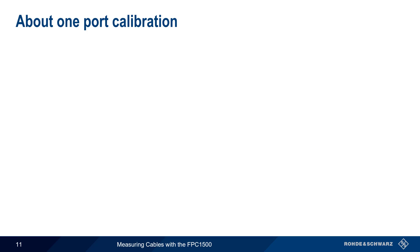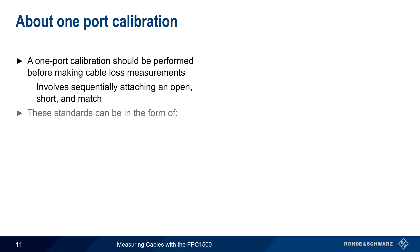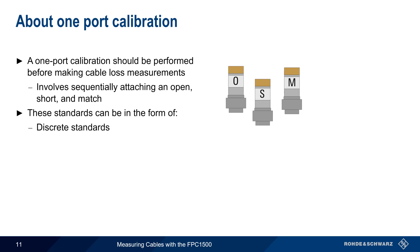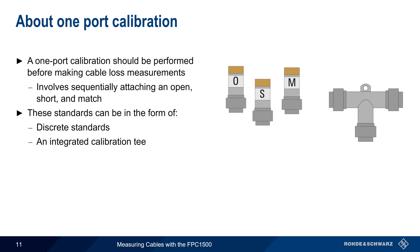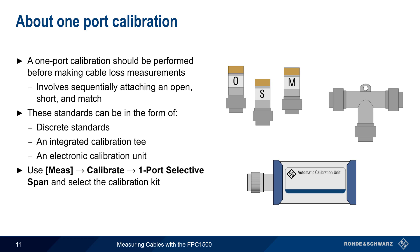Before making any one-port measurements, a one-port calibration should be performed. This process involves sequentially attaching an open, a short, and a match or load to the location where the cable under test will be connected. These standards can be in the form of discrete standards or may be combined into a calibration T. In addition to these manually switched standards, electronic calibration units can also be used. These switch their internal standards in and out automatically and are controlled by the FPC. Regardless of which type of standards are used, the process is started by pressing the Measure hard key, pressing Calibrate and One-Port Selective Span, and then selecting the calibration kit. Then simply follow the prompts to run the calibration process.